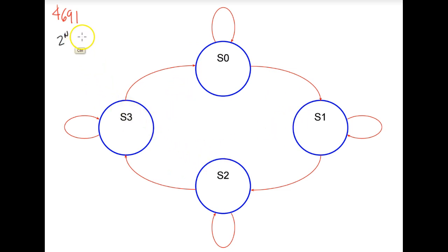And that means that we are going to need 2 squared, 2 to the 2, or 4. We're going to need n number of flip-flops. We're going to need 2 flip-flops.